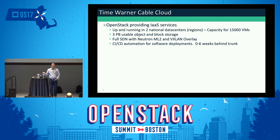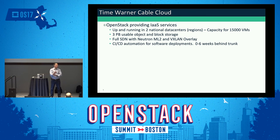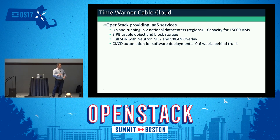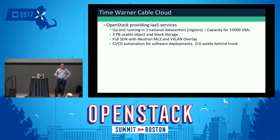To set some context, the cloud we built was based on OpenStack at Time Warner Cable, set up to run across two national data centers supporting about 15,000 VMs. We had three petabytes of usable object and block storage across multiple tiers. We provided all the core IaaS services you'd expect from OpenStack Cloud, plus enabling services like load balancing as a service, database as a service, and monitoring as a service. We were using Neutron for SDN with ML2 and the VXLAN overlay, using OVS — we were very happy with that. We weren't using anybody's distribution; we were rolling our own from the community with full CI/CD in place, and for some services we were just a few weeks behind trunk. That will become an important point later.